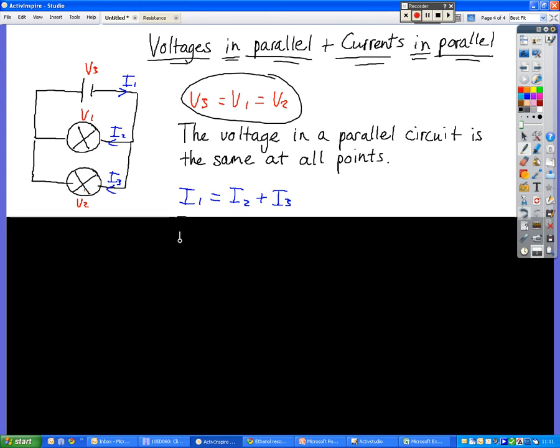So the voltage in a parallel circuit is the same at all points. If we then look at current, we have a current coming out of the battery, the electrons are flowing here, but they reach this point and they have to choose which way to go.